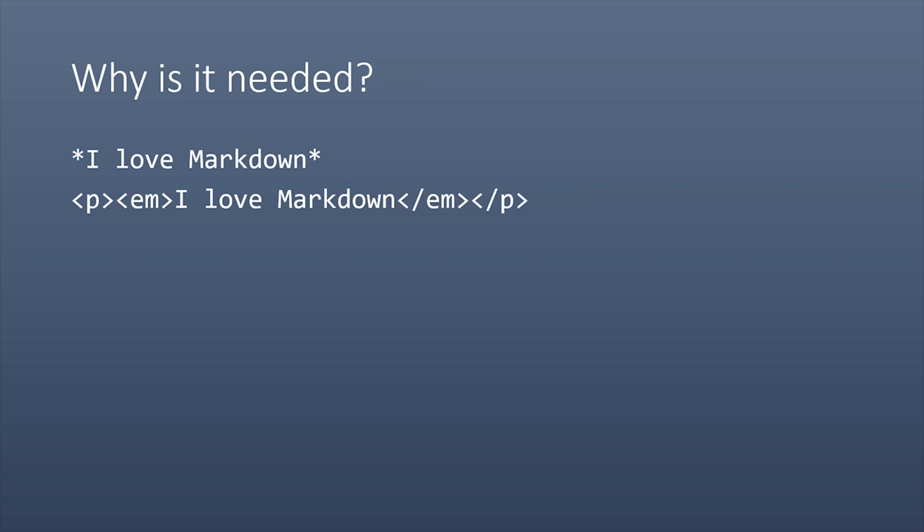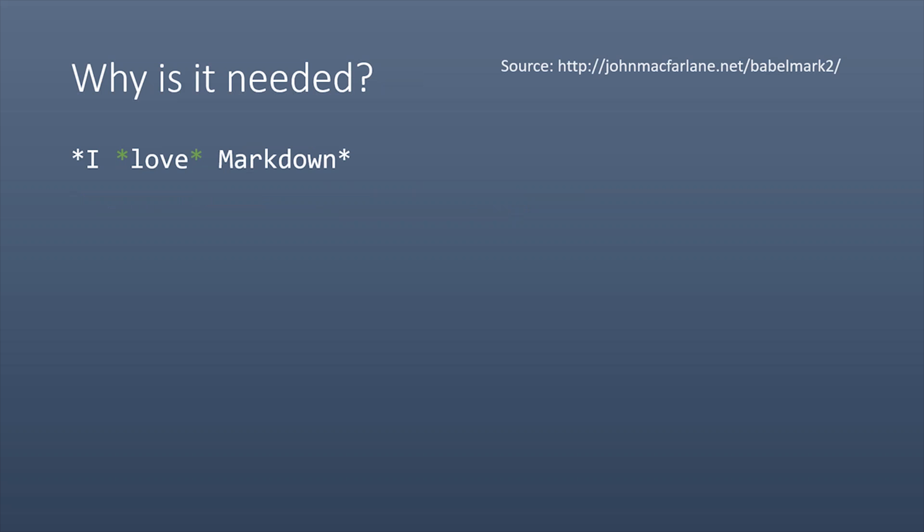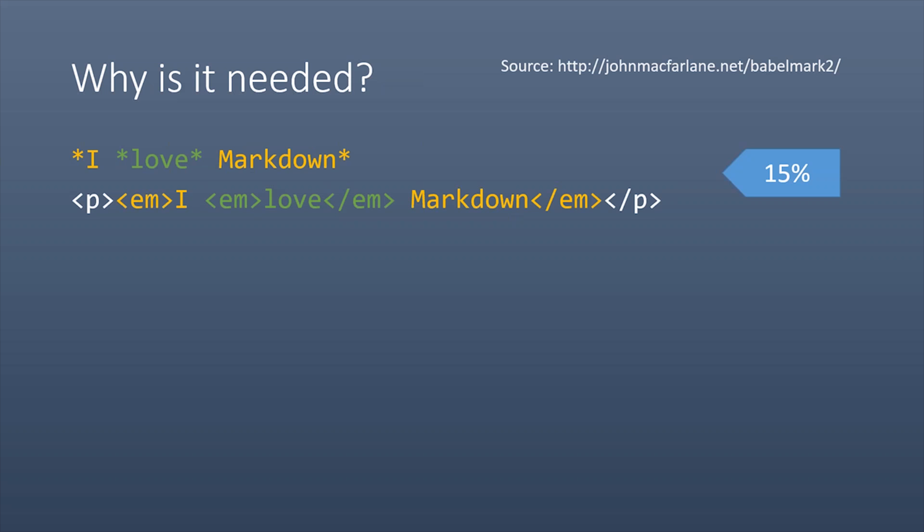But what happens if we add a couple more asterisks to our string? How should a parser handle something like this? There's a really cool website called BabelMark2 where you can type in any Markdown string, click submit, and it automatically runs it through 27 of the most popular Markdown parsers — showing you how they each parse things differently. In this case, you'd find that about 15% render it with the entire string emphasized, including a nested inner emphasis.